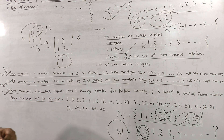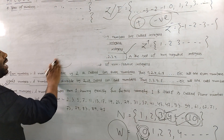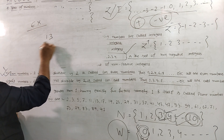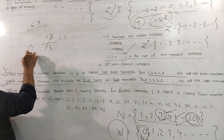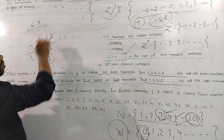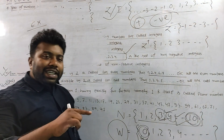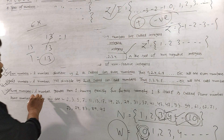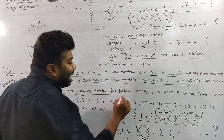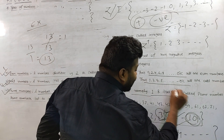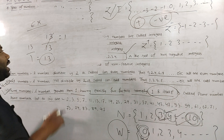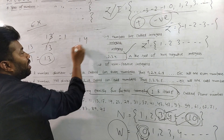Next is the prime number. A number greater than 1 that has exactly two factors — namely 1 and itself — is called a prime number. If a number can only be divided by 1 and itself, it is a prime number. So if you can only divide it by itself and 1, that is a prime number.